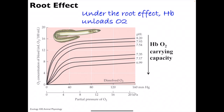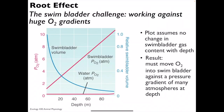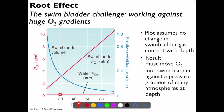Under the root effect, hemoglobin tends to unload oxygen at any partial pressure, so with increasing root effect, you're driving oxygen off the hemoglobin. This is quite a challenge, because it is a huge oxygen gradient — the swim bladder is full of pretty much pure oxygen at 100%, while the amount of oxygen in water is very, very low.